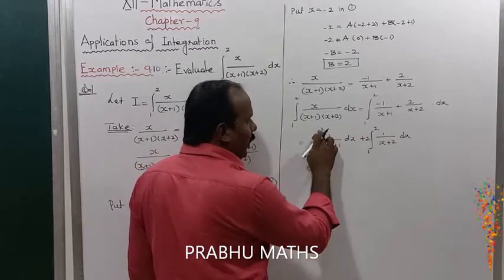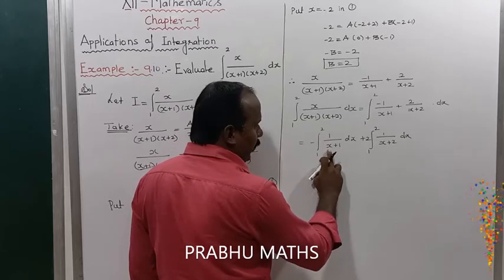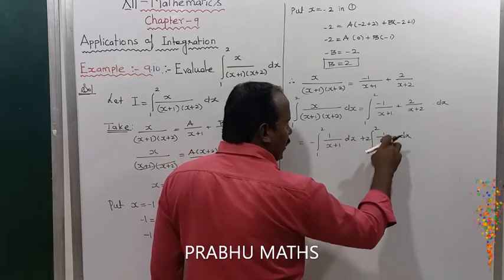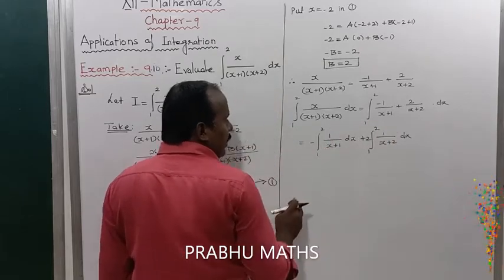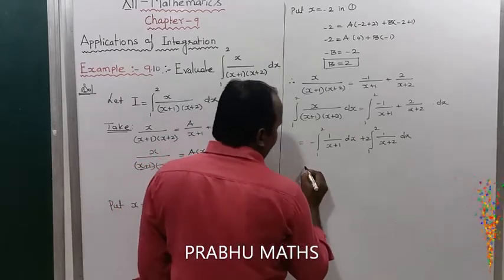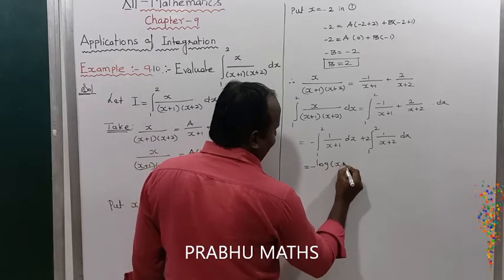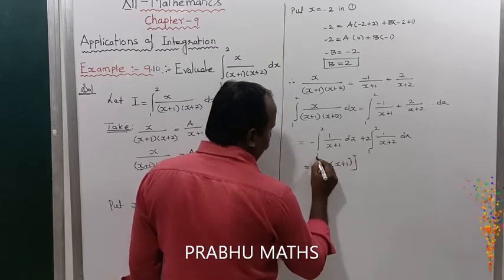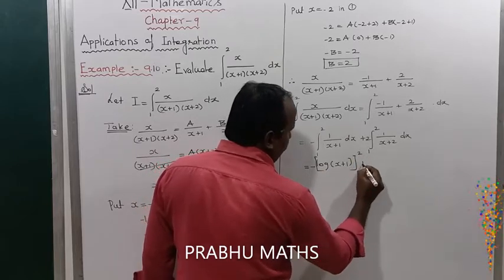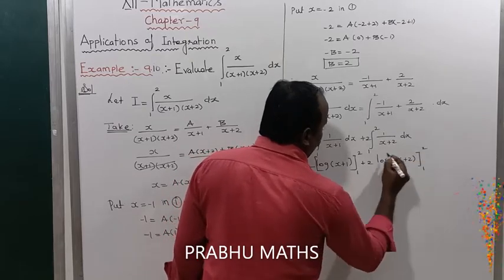Since differentiating the denominator gives a numerator value of 1, the denominator takes a log form. So we get -log(x+1) from 1 to 2, plus 2·log(x+2) from 1 to 2.